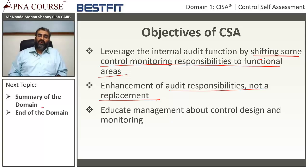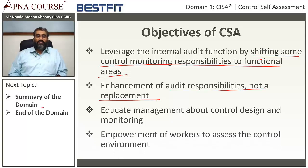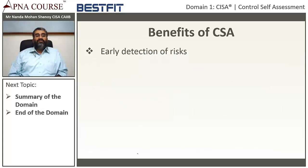They also know they are not victimized when the audit department comes. Most departmental heads are scared of audit because they feel audit will come and find so many mistakes. To remove that fear psychosis among the departmental head fraternity, one of the best ways is implementing a control self-assessment — sitting with the departmental head, making him understand, and making him look at some of the controls. This also empowers workers to assess the control environment.